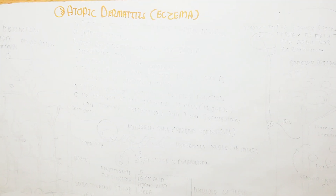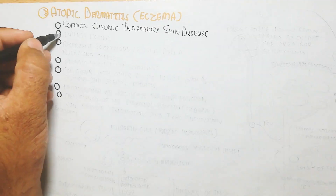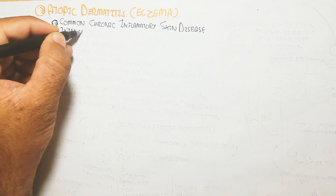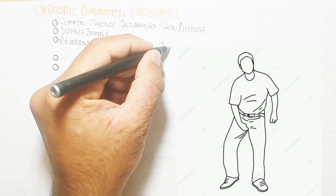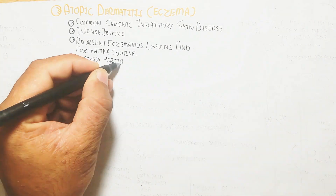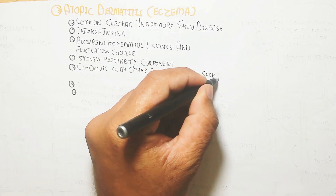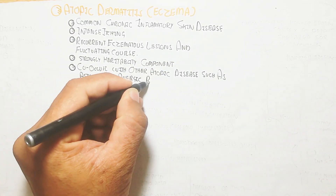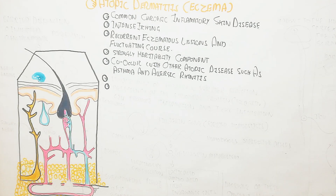In this video we will understand about atopic dermatitis, also known as eczema. It is a common chronic inflammatory skin disease. It creates intense itching and damages the upper layer of the skin — the epidermis — causing recurrent eczematous lesions. It has a strongly heritable component and co-occurs with other atopic diseases such as asthma and allergic rhinitis.